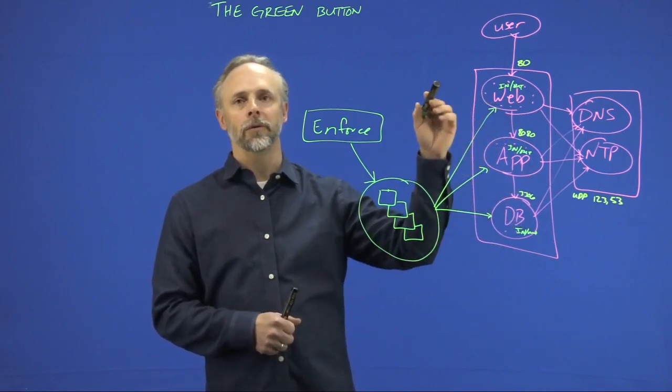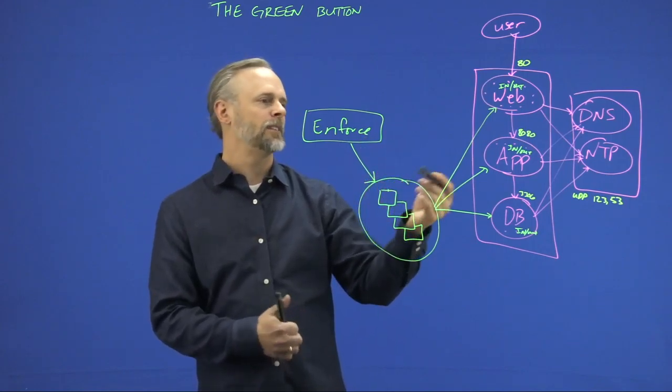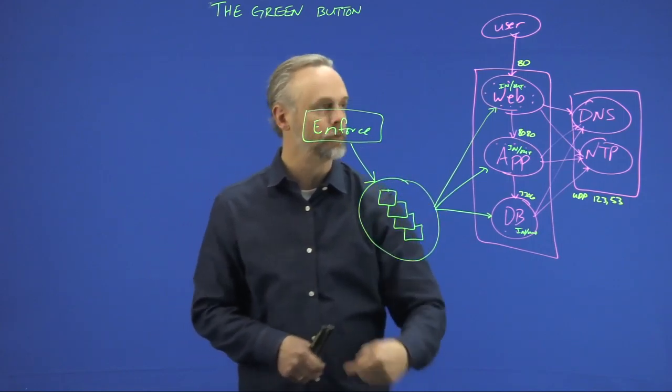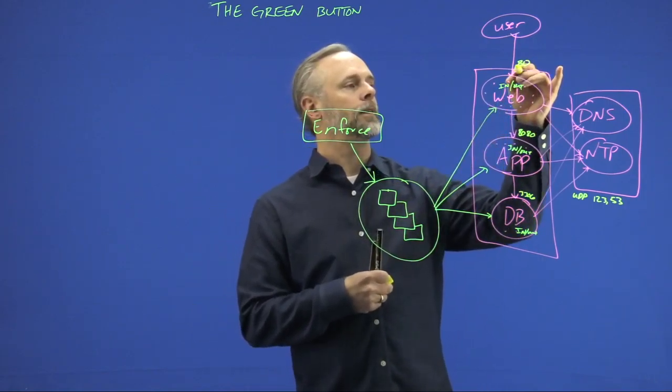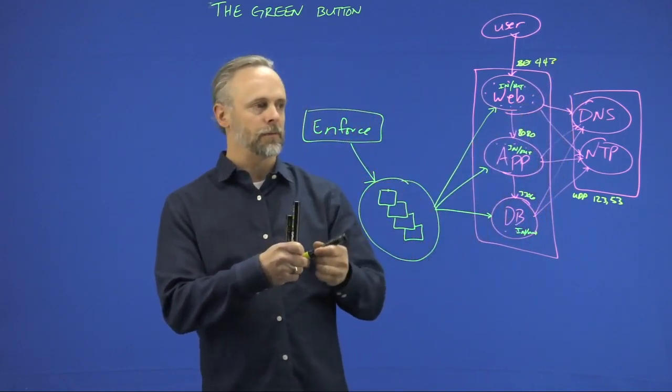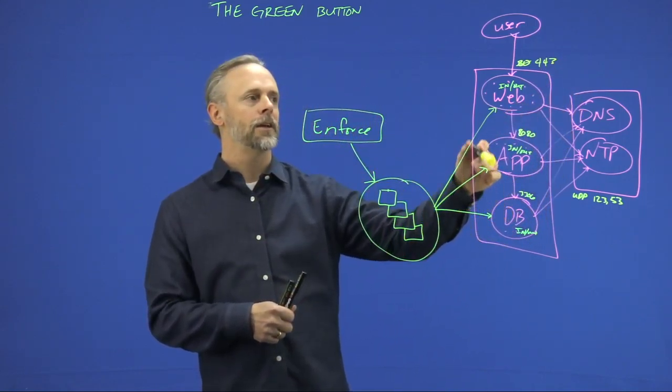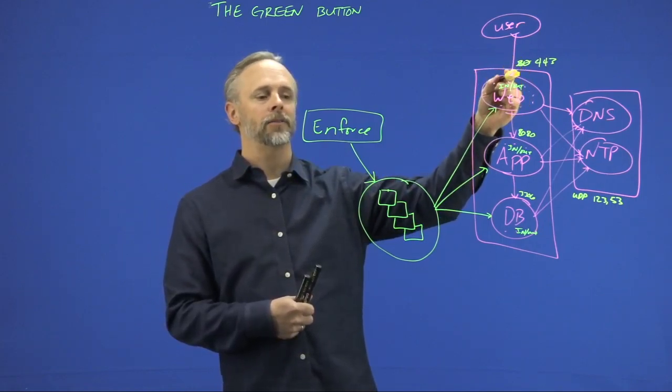And essentially, what happens is that if any of this policy changes, we would maintain that within the cluster. And then you could go in and say, all right, let's say we changed our application and we want to do maybe port 443 instead of 80. We would go into Tetration, into the scope for this application. And if we learned it, we would add it like that. Or we could manually go in and modify that policy.